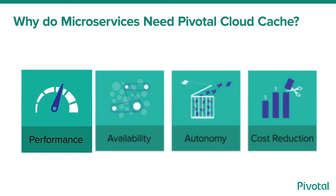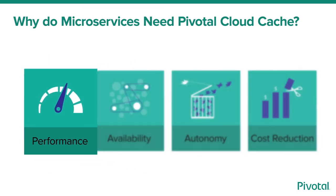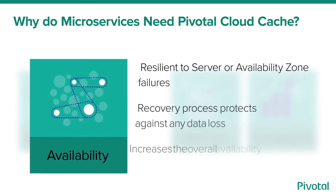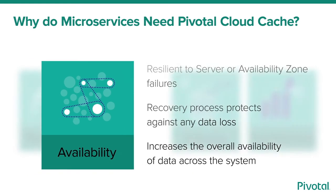Pivotal Cloud Cache is an in-memory cache that provides high-performance access to data. Horizontal scalability allows for increase in capacity by adding servers to a cluster as and when needed. Microservice-based applications can have a large number of components. Pivotal Cloud Cache ensures continued access to data and resilience to server or availability zone failures.